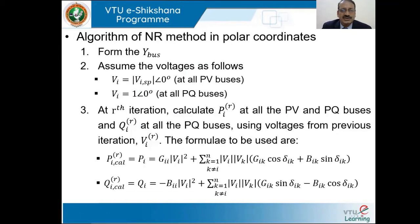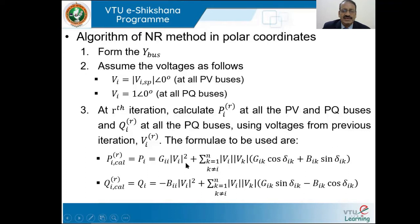After specifying and assuming the voltages at all buses, we need to begin the iterative process. At the R-th iteration, we need to calculate PIR at all the PV and PQ buses and QIR at all the PQ buses. To calculate PIR and QIR, we use the formula: PI calculated at R is equal to GII·VI² plus summation K=1 to N, K≠I, of VI·VK·(GIK·cos(δIK) + BIK·sin(δIK)).